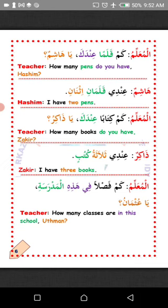Thakir — what is being counted is male, mudhakkar not mu'annas, so the number must oppose what is being counted. Numbers from three to ten must oppose what is being counted: if masculine, the number must be feminine. For instance: thalathatu kutubin — three books. The singular of kutub is kitabun, which is mudhakkar, so we use thalathatu, the feminine form.